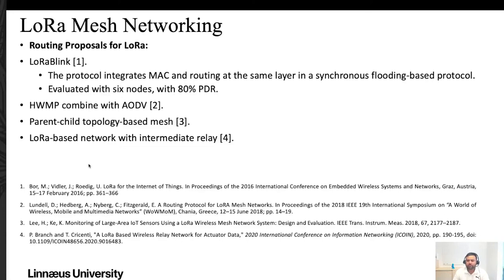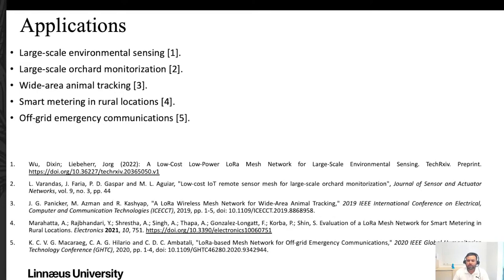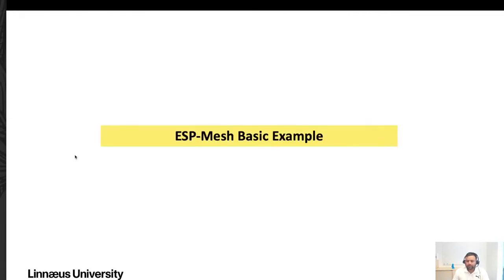Since LoRa provides very long range, LoRa mesh networking enables large-scale applications such as environmental sensing, large-scale orchard monitoring, wide-area animal tracking, smart metering in rural locations, and off-grid emergency communication — meaning you can communicate between LoRa devices without any internet connectivity. I will show you how this works in practice.